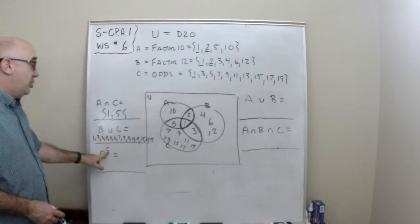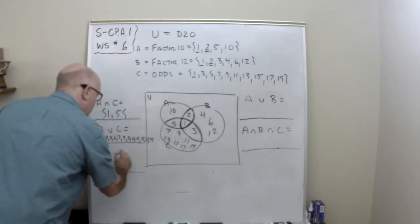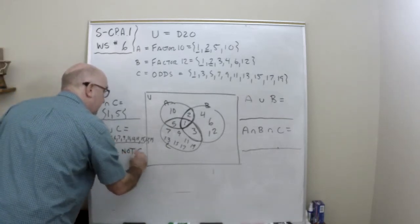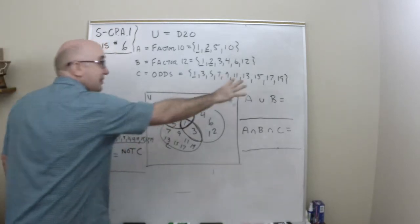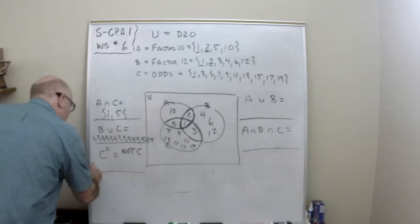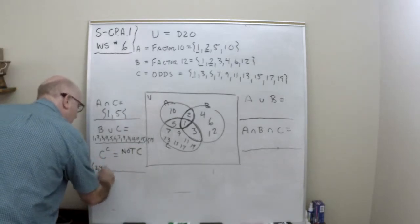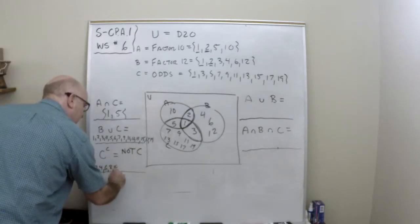The things that are not in C. This means not in C. Now that is a bunch of things as well. Well actually C is the odds, so it would be all of the evens. 2, 4, 6, 8, 10, 12, 14, 16, 18.